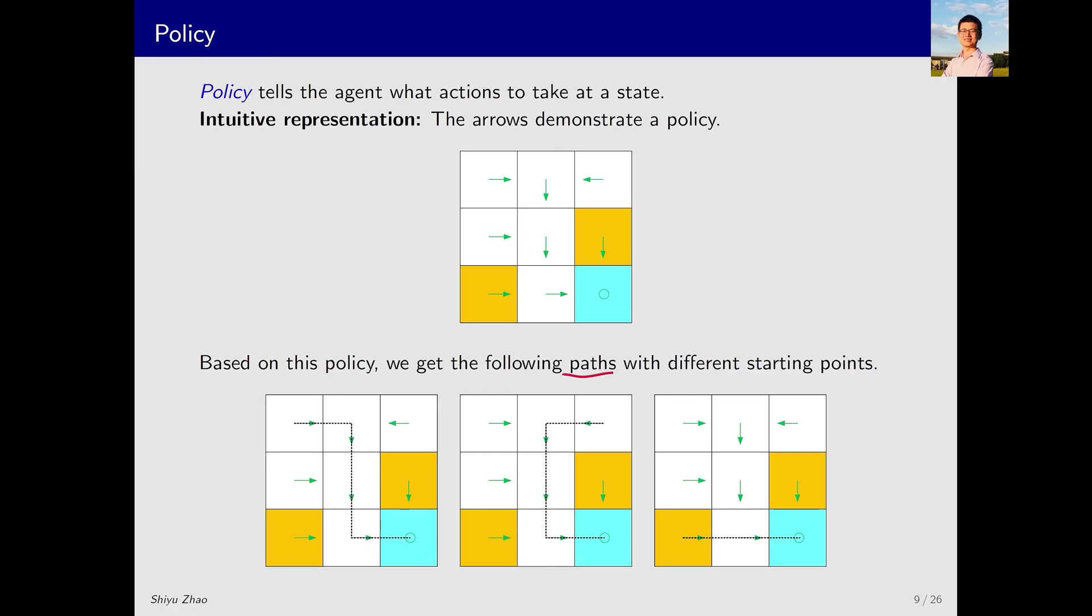What is a path or a trajectory? If I start from here, the green arrow represents the policy, telling me to move right when I'm in this location. According to the state transition probability, I will next jump here. And then, the policy, indicated by the green arrow, tells me to move downward. Following this direction, I arrive at this state. Subsequently, the policy directs me downward again, leading me to here and then to here. Upon reaching here, the policy tells me to stay still. Therefore, starting from this location, I will follow such a path. If I begin from this state, following the policy, I will end up here. Similarly, starting from this location, according to the policy and state transitions, I will make my way over here, which is quite intuitive.